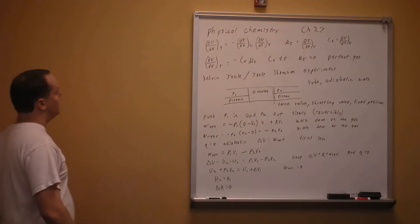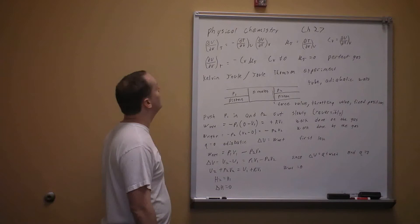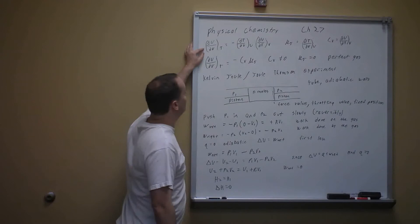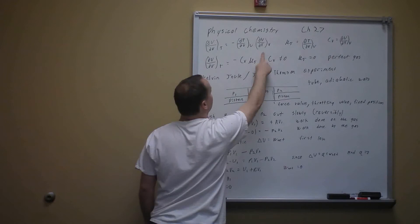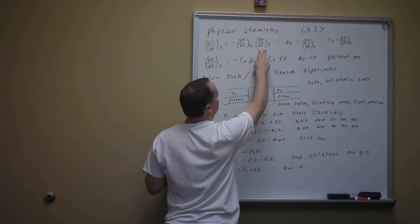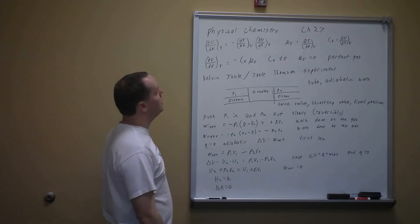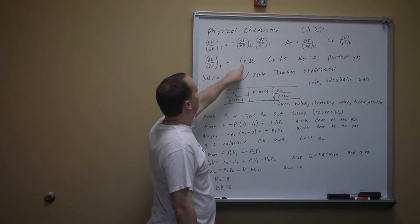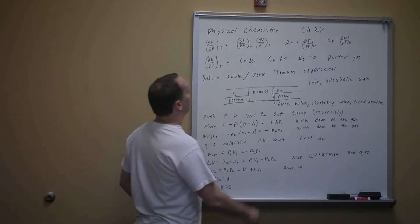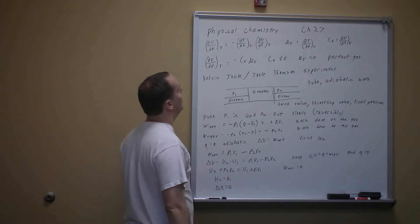To summarize: the derivative of internal energy with respect to volume at constant temperature equals minus the derivative of temperature with respect to volume at constant internal energy, times the derivative of internal energy with respect to temperature at constant volume. The first term is μJ, the Joule coefficient, and the second term is Cv, the heat capacity at constant volume. Therefore dU/dV at constant T equals minus Cv times μJ. Since Cv cannot equal zero, for a perfect gas μJ equals zero.